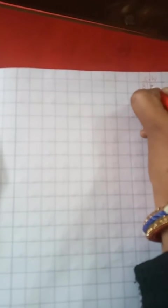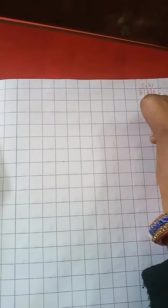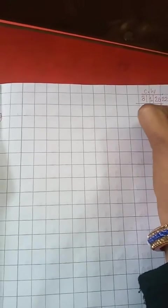So students, first we will enter the date. So write C.W. 8/1/2022. Ok student, the date is complete.